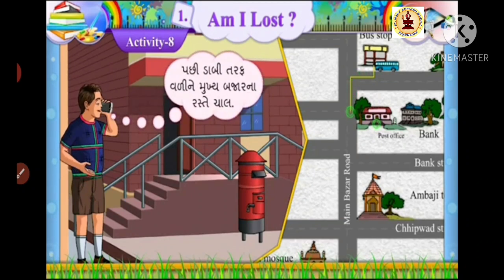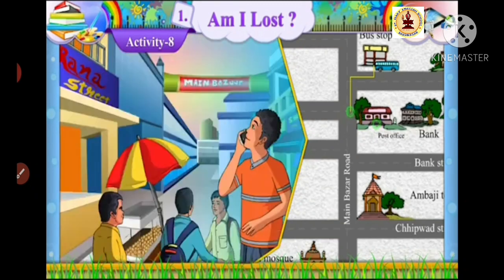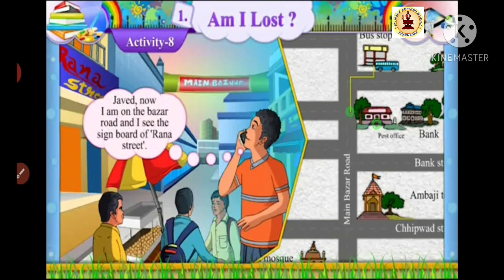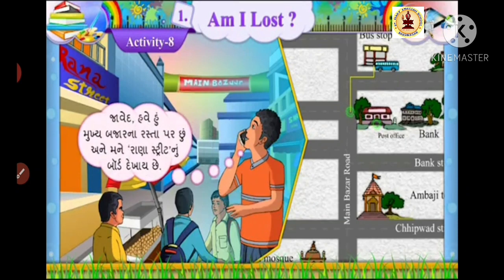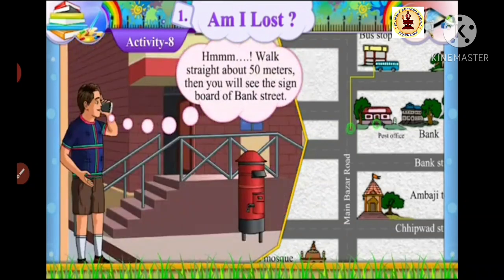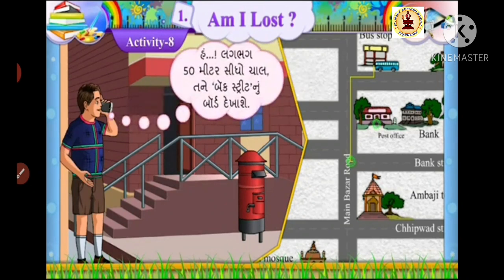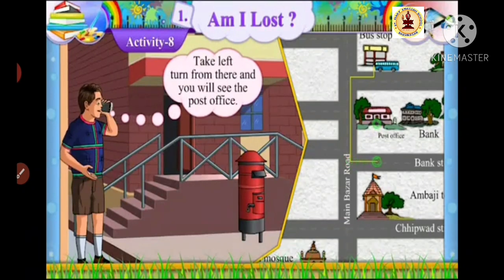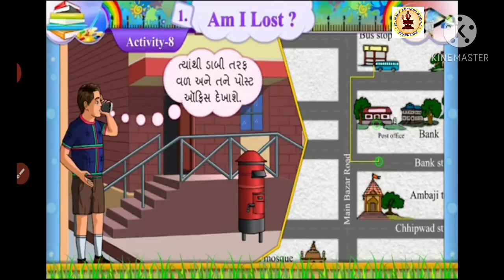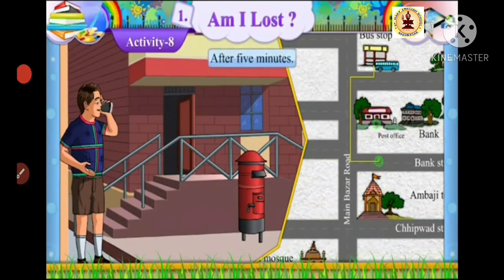Then turn left and walk along the main Bajar Road. Now I am on the Bajar Road and I see the signboard of Rana Street. Walk straight about 50 meters, then you will see the signboard of Bank Street. Take a left turn from there and you will see the post office. After 5 minutes.